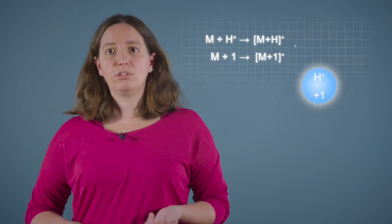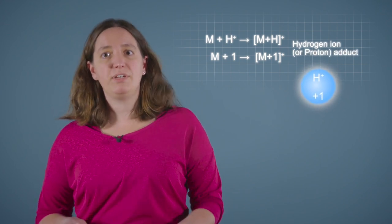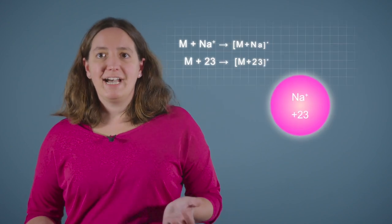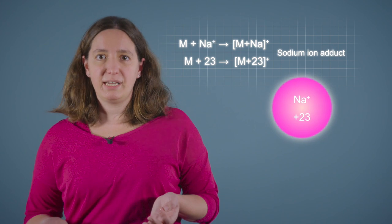Typical cations that can form adduct ions in positive mode ESI include hydrogen ions, also known as protons, that make singly charged adduct ions one mass unit heavier than the analyte molecules, and sodium ions that make the singly charged adduct ions 23 mass units heavier than the analyte molecules.